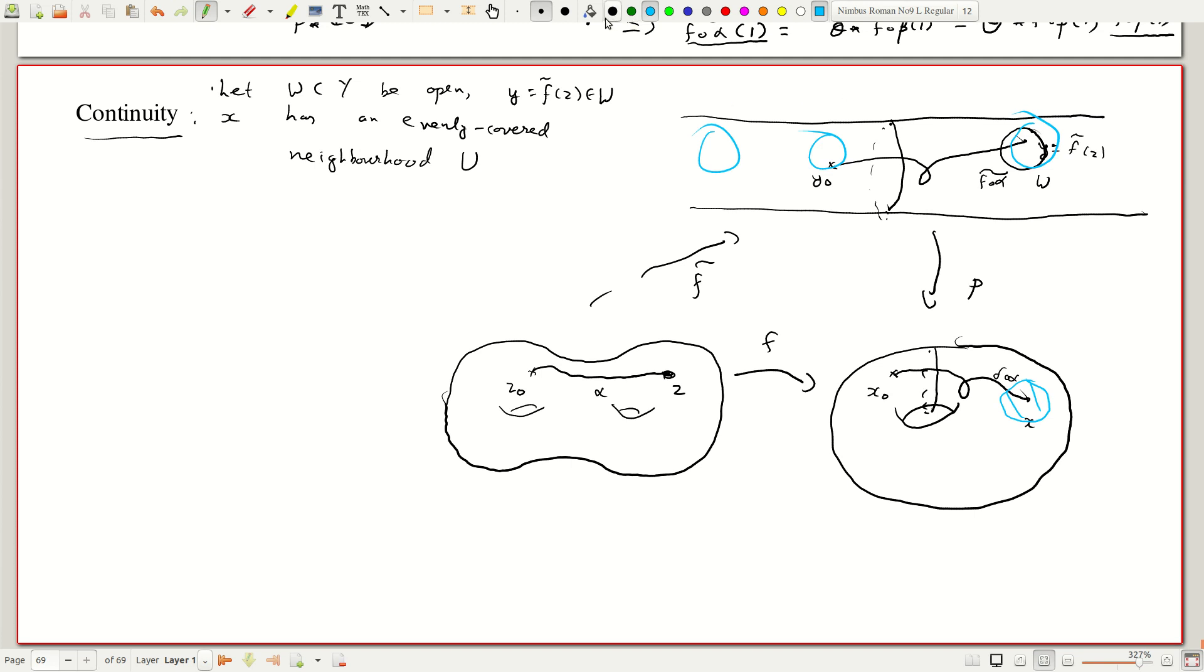So what this tells you is that y belongs to some component v contained in p inverse of u and p restricted to v from v to u is a homeomorphism.